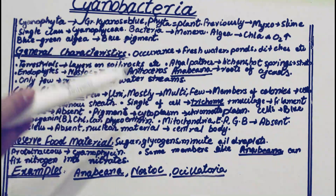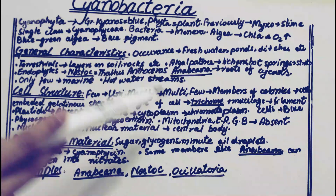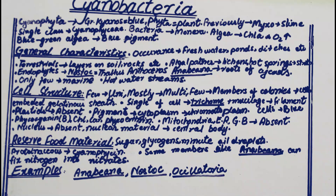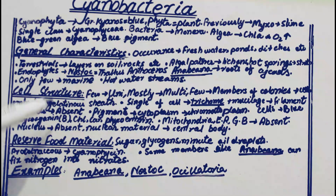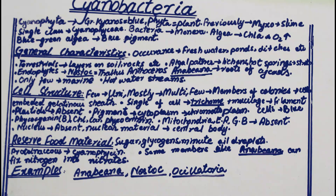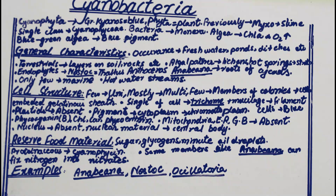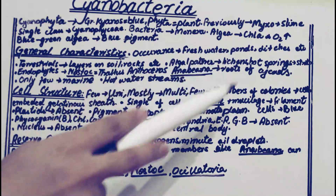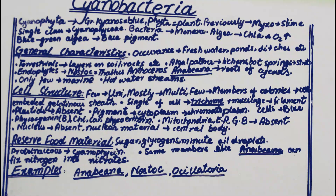Regarding cell structure, cyanobacteria are mostly multicellular, though a few are unicellular. Some species form colonies — many members live together embedded in a gelatinous sheet. A single cell in the colony chain is known as a trichome. If the trichome also has mucilage covering between the cells, then the whole structure is known as a filament.